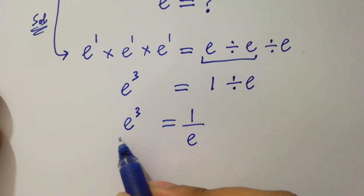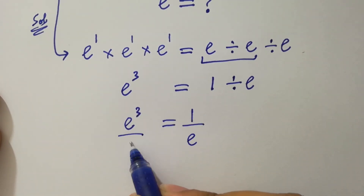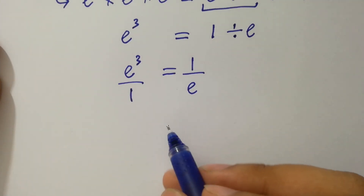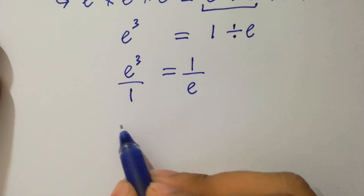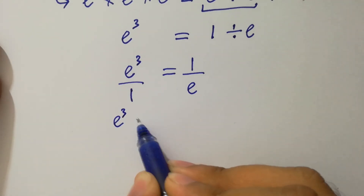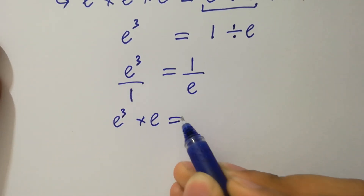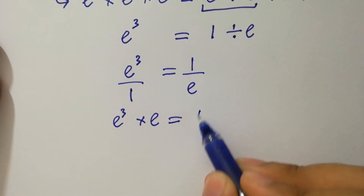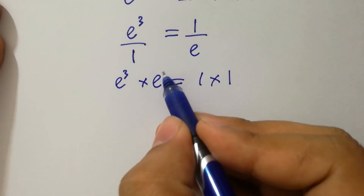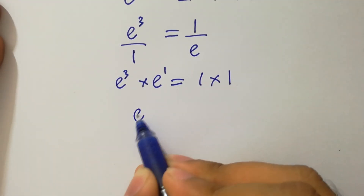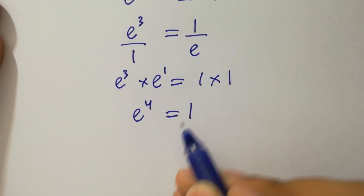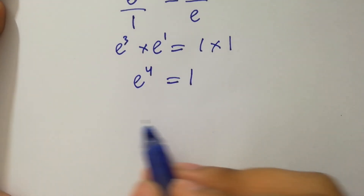By cross multiplication, e cubed times e equals 1 times 1. This gives e to the power 3 plus 1, which is 4, equal to 1. So e to the power 4 equals 1.